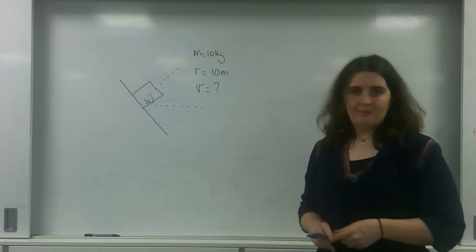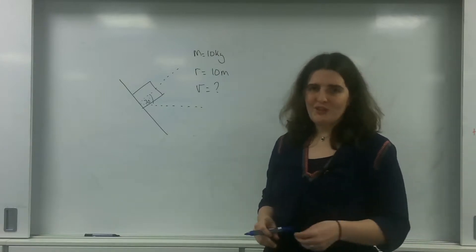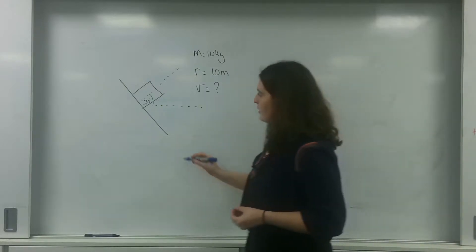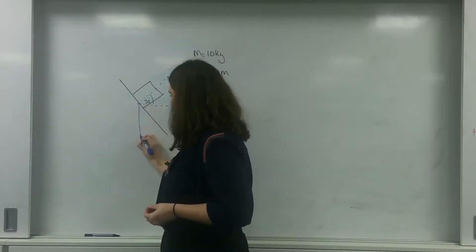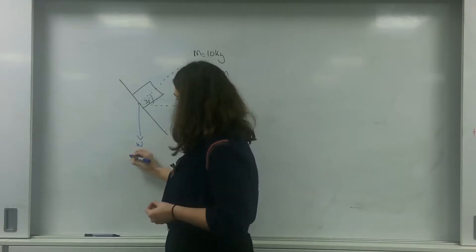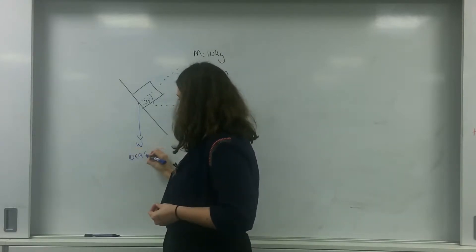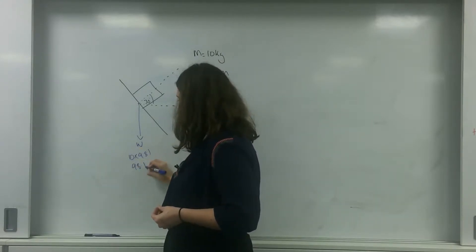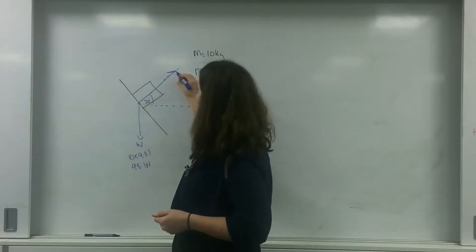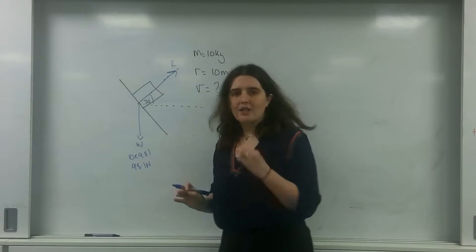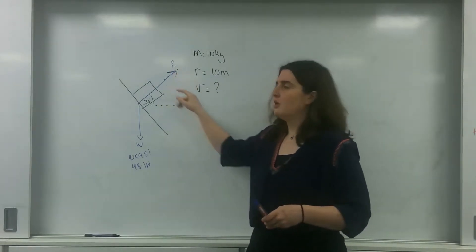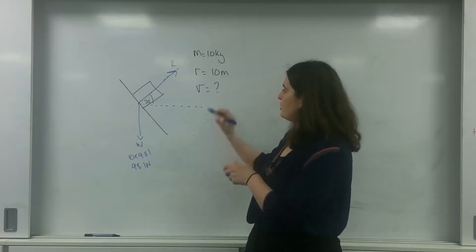Here is my diagram. The first thing you need to do with any diagram is label the forces. So I have the weight going downwards — that's 10 times 9.81, which is 98.1 Newtons. And I have this reaction force here, and it's this reaction force that has a component working into the centre of the circle.